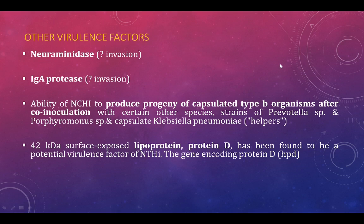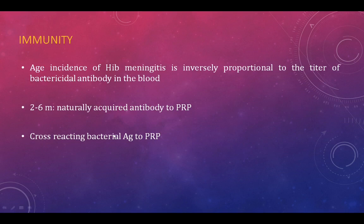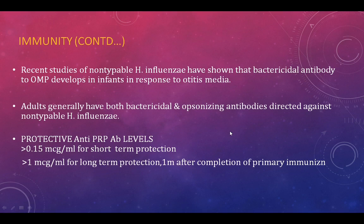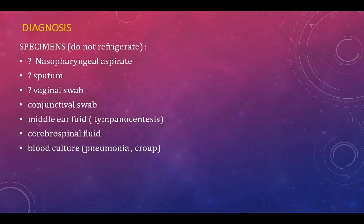Naturally acquired antibody against PRP is present at 2–6 months. A protective level of anti-PRP antibody is >0.5 µg/mL (short-term protection); ~1 µg/mL gives long-term protection, usually achieved after completing immunization. For diagnosis, sample collection depends on presentation: nasopharyngeal aspirates, vaginal swab, lower respiratory tract sample, conjunctival swab, middle ear fluid (via tympanocentesis), CSF, or blood culture.